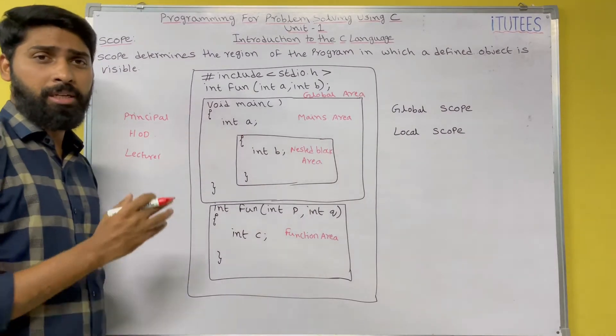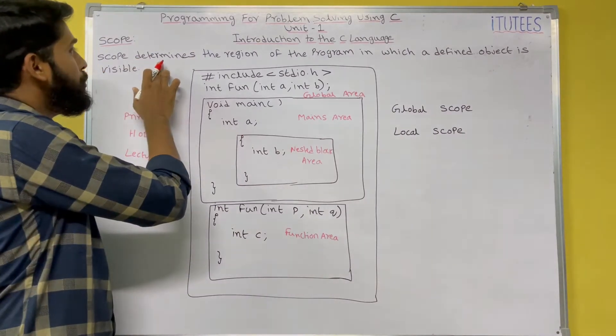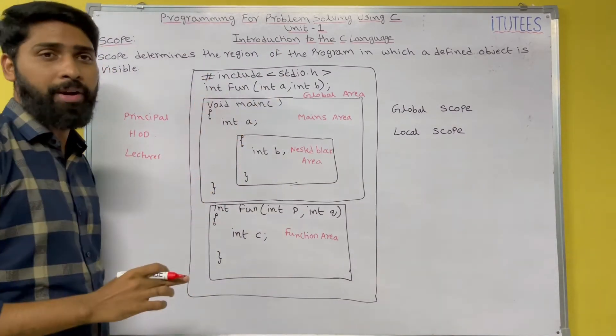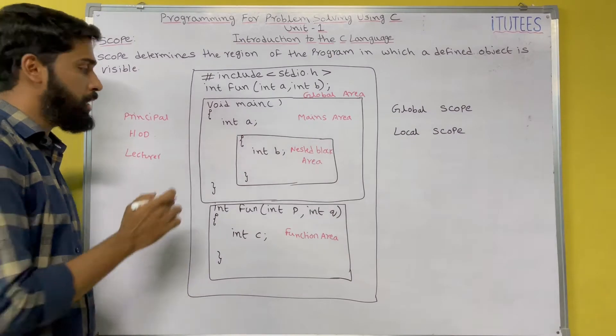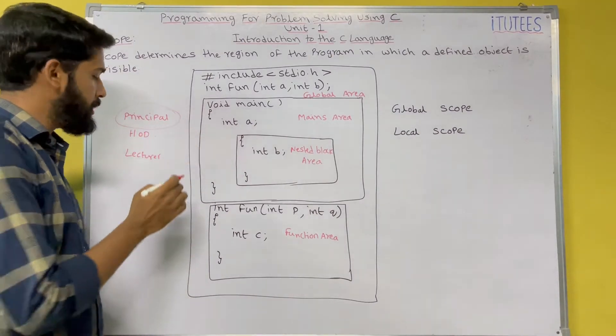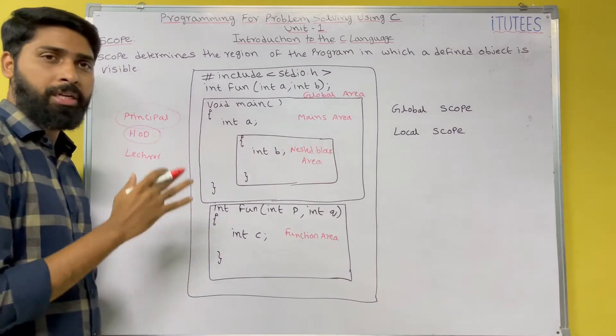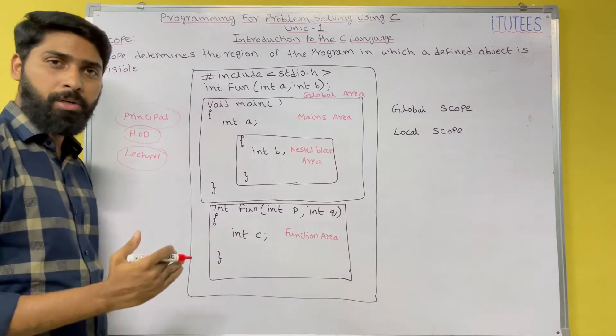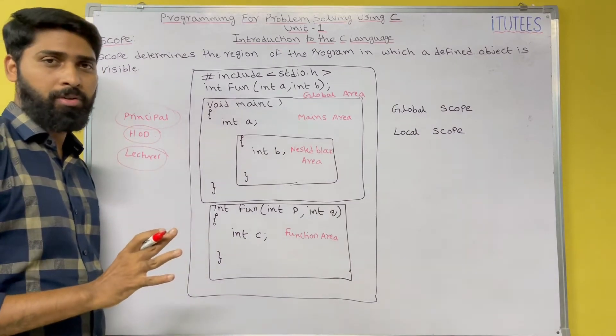Now you see the definition of the scope again. Scope determines the region of the program in which a defined object is visible. Now this Principal object is visible to entire college. The HOD object is visible to within the department. And Lecturer object is visible to within the classroom.